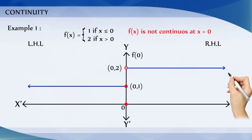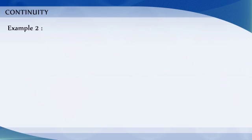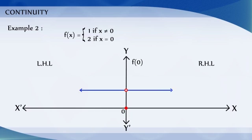Now consider another example. The function f of x is equal to 1 if x is not equal to 0, and the function f of x is equal to 2 for x is equal to 0. This function is also defined at every point of the real line.